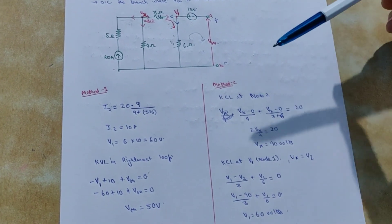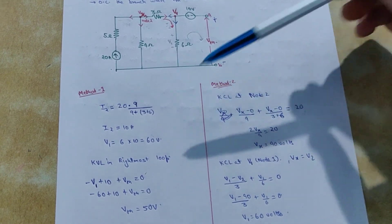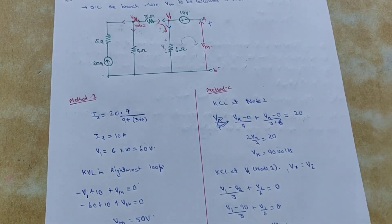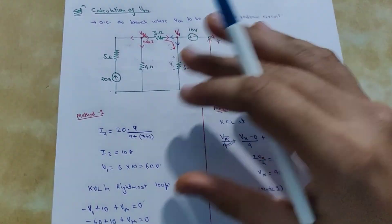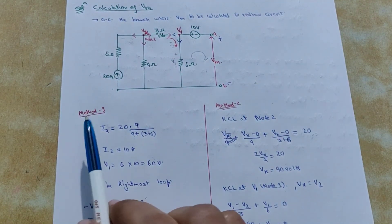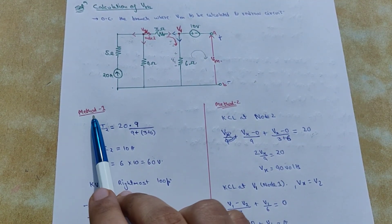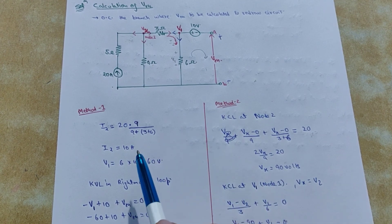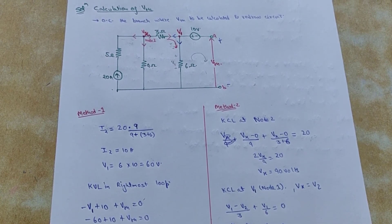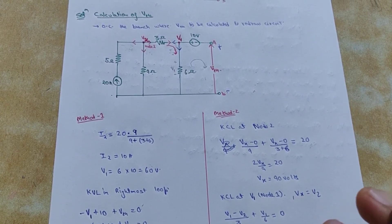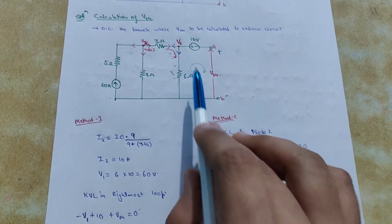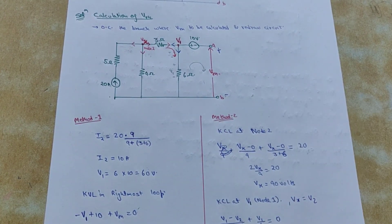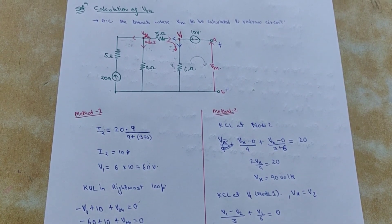So here you can see how simply VTH can be calculated using two methods. You can adopt whichever one you like. The basic idea of showing two methods was to show you how easy it is to calculate VTH. Never panic when you see Thevenin and Norton problems — simply redraw the circuit and use nodal or mesh analysis, whichever seems fit.